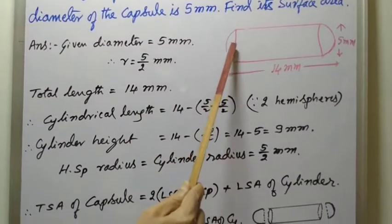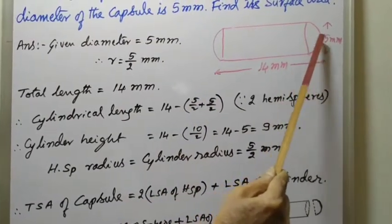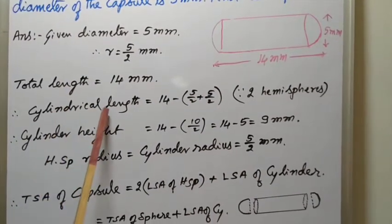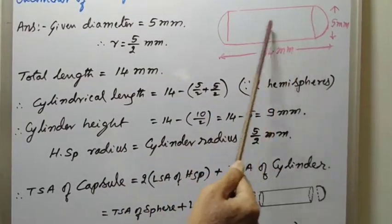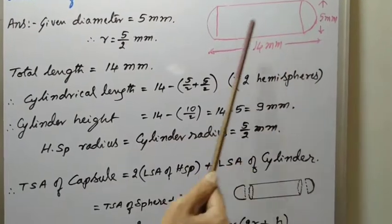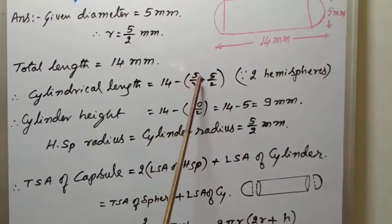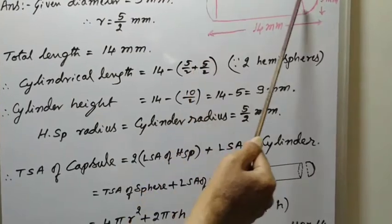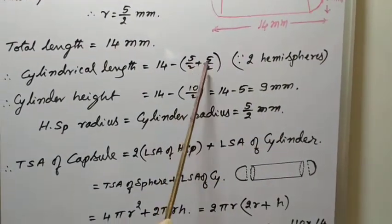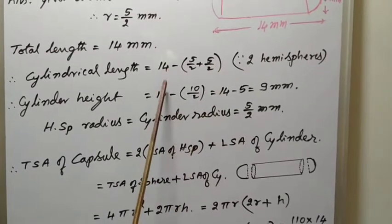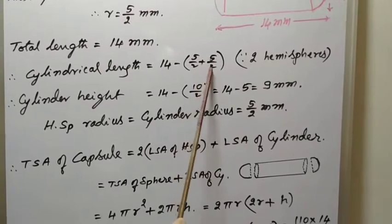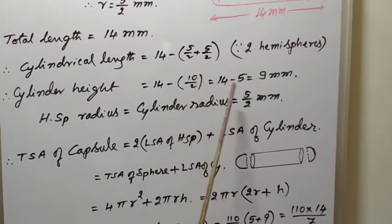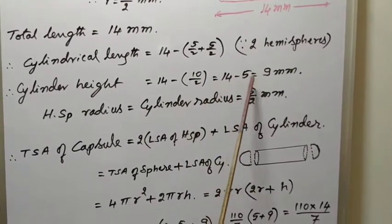Now, radius 5 by 2 means this is also 5 by 2 and this part also 5 by 2. Therefore, cylindrical length only this part from this part to this part. Cylindrical length, this length equals 14 minus (5 by 2 plus 5 by 2). So, 14 minus 5 by 2 plus 5 by 2 means 14 minus 10 by 2, that is 14 minus 5. The difference is 9 millimeters.